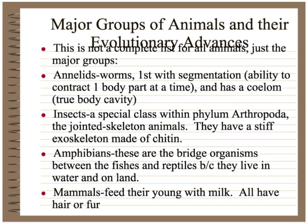The four groups you are responsible for start with the annelid worms. Annelid worms are important because they are the first with body segmentation. They also have a true body cavity called a celom — a cavity completely lined with tissue. This segmentation is an important evolutionary advance because it allows the organism to contract one part of the body at a time, since muscles are in each individual segment rather than running the entire length of the body.